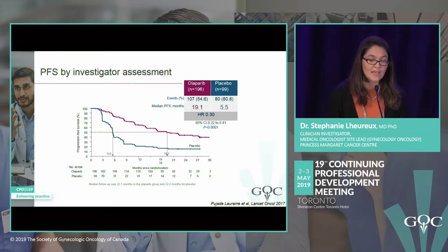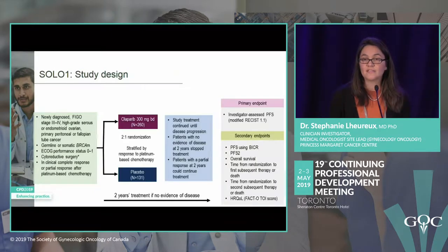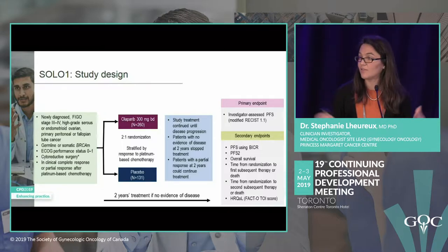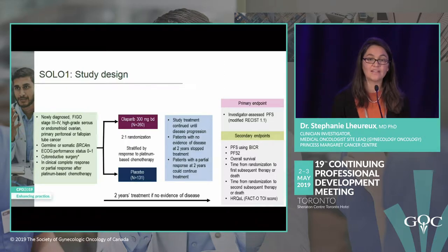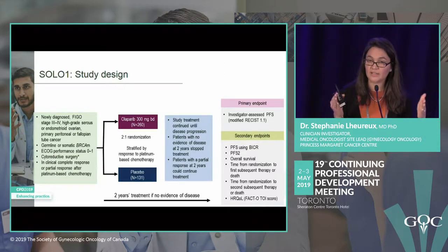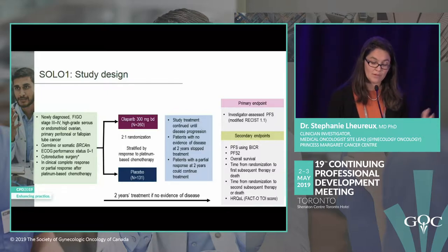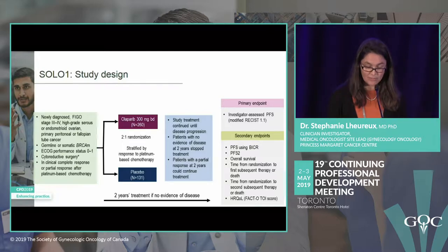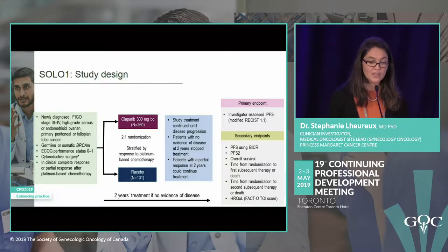Based on SOLO-2, the field moved to the first-line setting. Investigators took the BRCA1 and 2 mutation population and randomized patients between olaparib and placebo, with PFS as the primary endpoint. At enrollment, most patients had complete debulking surgery, as bevacizumab was not allowed in this trial.